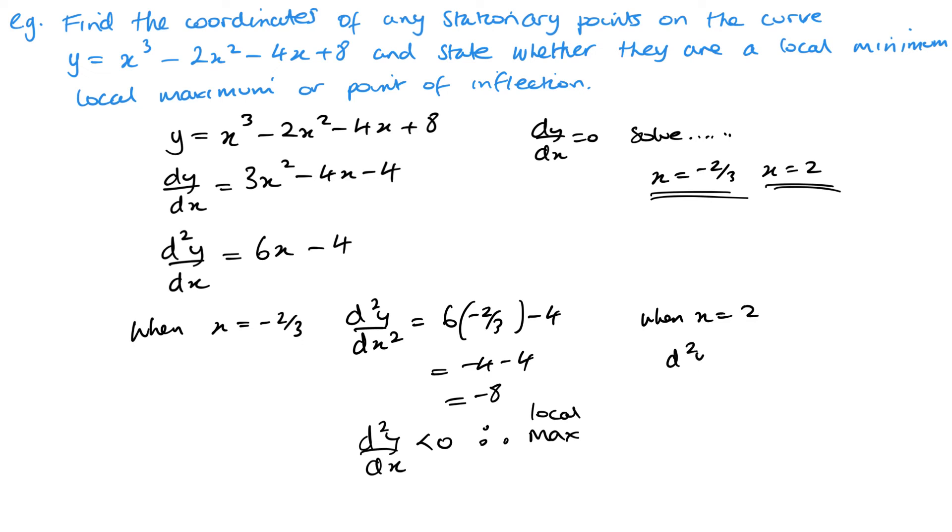So therefore it's a maximum or a local maximum. And when x = 2, now we know what to expect here as we've obviously already done this previously, but here we've got it now: 12 - 4 is 8. So d²y/dx² is greater than 0, so therefore local minimum.